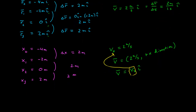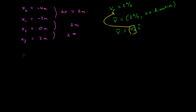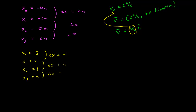Let's look at a second example. I have a particle that starts out at x0 equal to 3, then x1 equal to 2, x2 equal to 1, and x3 equal to 0. From this I can calculate delta x, which is x1 minus x0: 2 minus 3 is minus 1. Then the delta x between the next interval is minus 1 again. If each time difference is equal to 1 second, then the x component of my velocity is negative 1 meters per second, equal to delta x over delta t — in this case minus 1 over 1 meters per second.